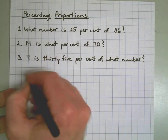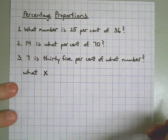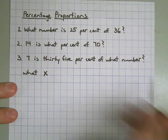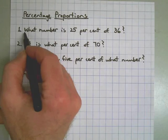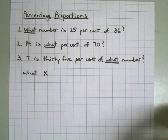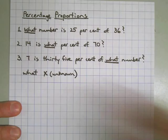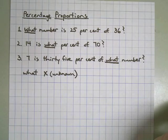Now, first of all, the word what for us means X. So let's find the what's in all of these questions. There's one, there's one, and there's one. Every one of these questions has a what or an unknown, and that's our X. When we rewrite this as a proportion, we'll use X in place of the what.